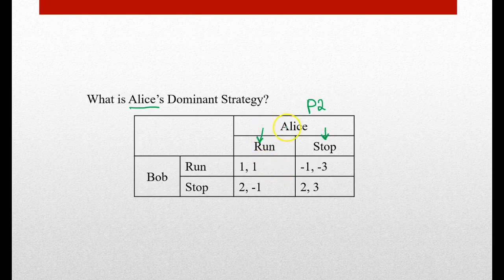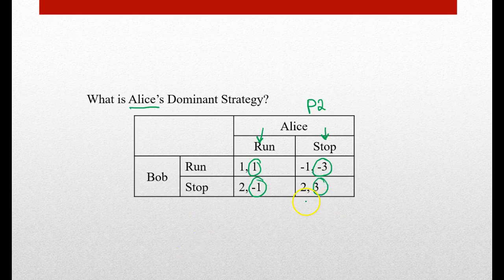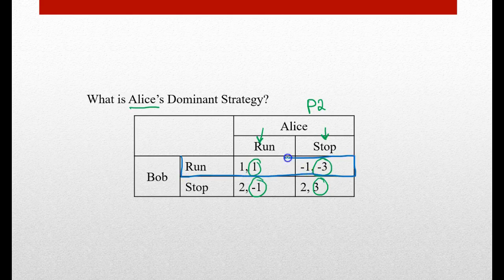Remember, Alice is going to be player two since she's on top. She has two choices: she could either run or stop. Since she's player two, she's going to have columns, and the second number will be her payoffs — so we can basically ignore Bob's payoffs, which are the first numbers. We're trying to decide: should Alice run or should she stop? We're going to keep Bob's choices the same. If Bob chooses to run, we have one and negative three — I'm going to choose the positive number, so Alice's best choice would be to run.